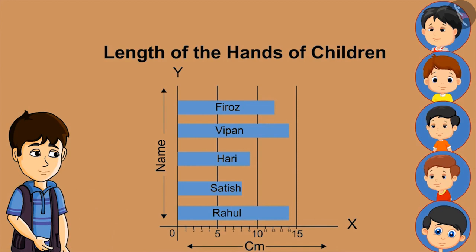By closely looking at this, can anyone tell me who has the longest hands? Rahul and Vipan. How long? 14 cm. Absolutely right!